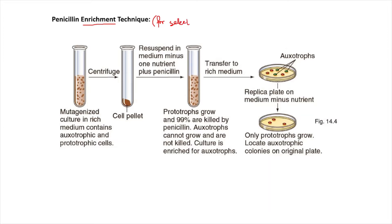Whenever we want to select only the auxotrophic mutants from a mixture of both auxotrophs as well as prototrophs, we can perform this penicillin enrichment technique, where we will only select for auxotrophs and we will not take into account the prototrophs.